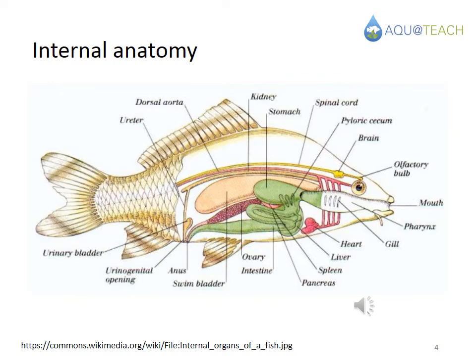The heart and blood circulation systems are quite simple compared to mammals. Fish also have a liver and a spleen, for example, but a unique organ called the swim bladder. The swim bladder should be filled with air at the correct time in order to avoid developmental abnormalities such as vertebral deformations. Finally, we'll mention the kidneys, which are very important in terms of maintaining the correct osmotic balance.